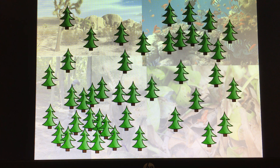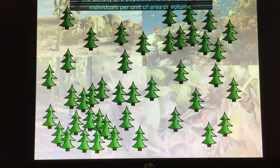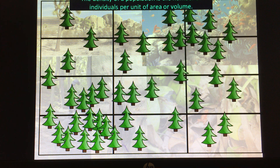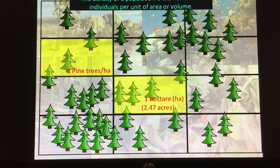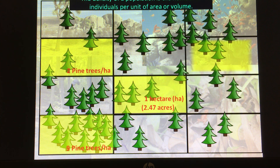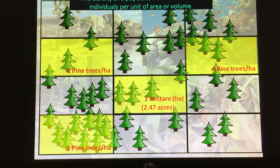One of the characteristics that can describe populations is population density — counting the number of individuals per unit of area or volume. For example, using hectares: in one hectare I'd have two pine trees, here I'd have nine per hectare, and here I would have four per hectare. Ecologists can use this to study a population and make inferences about it.